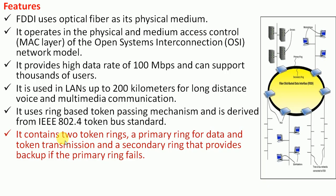FDDI contains two rings. The primary ring is used for data and token transmission. The secondary ring provides backup: if the primary ring fails, the secondary ring takes over and transfers data over the network.